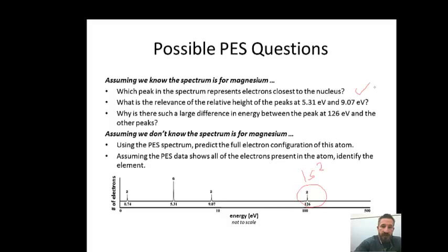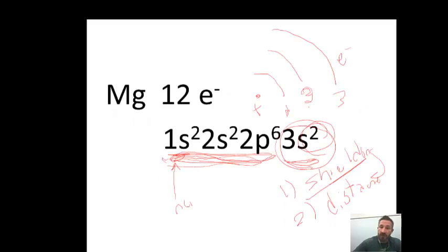Next question: What is the relevance of the relative height of the peak at 5.31 and 9.07 electron volts? We see this peak is higher. That indicates there's more electrons. That's why we say there's 6 electrons ejected from that peak. That would tell us that if we go back to electron configuration, that would indicate that that would be the 2p sub-level that contains 6 electrons.